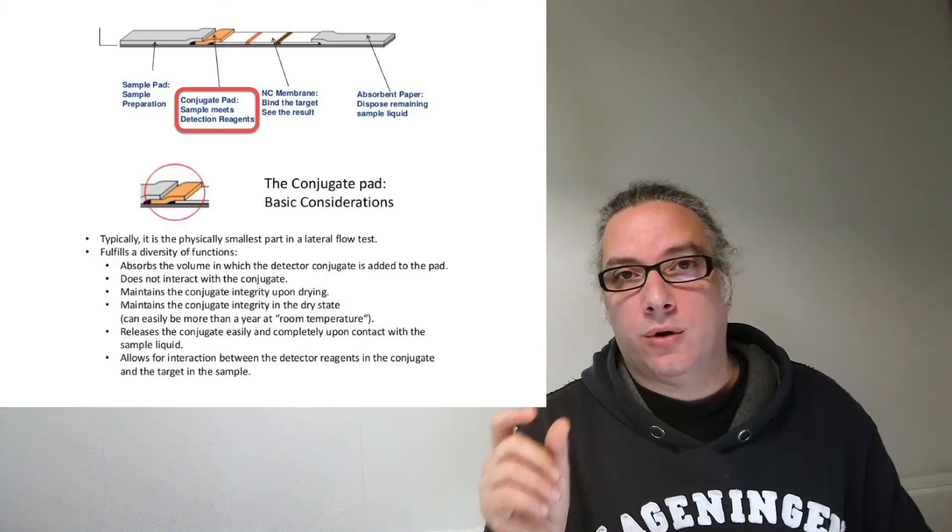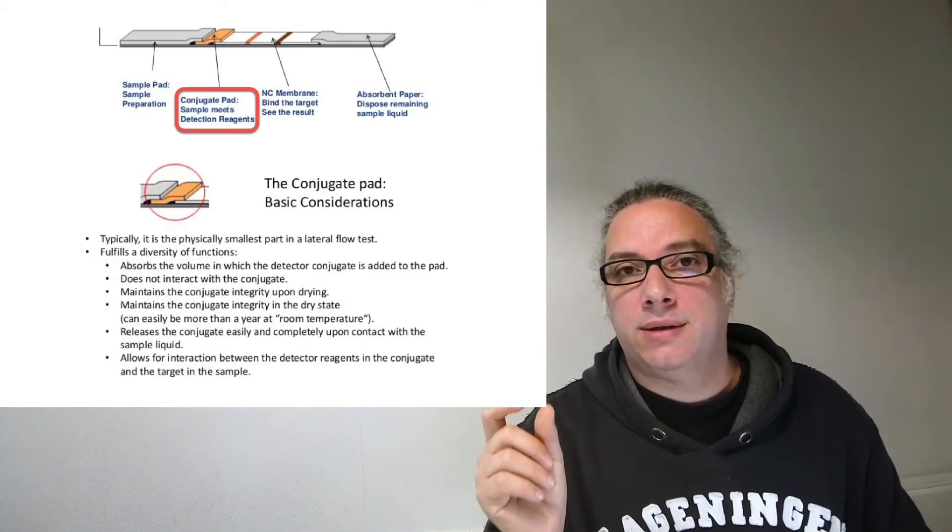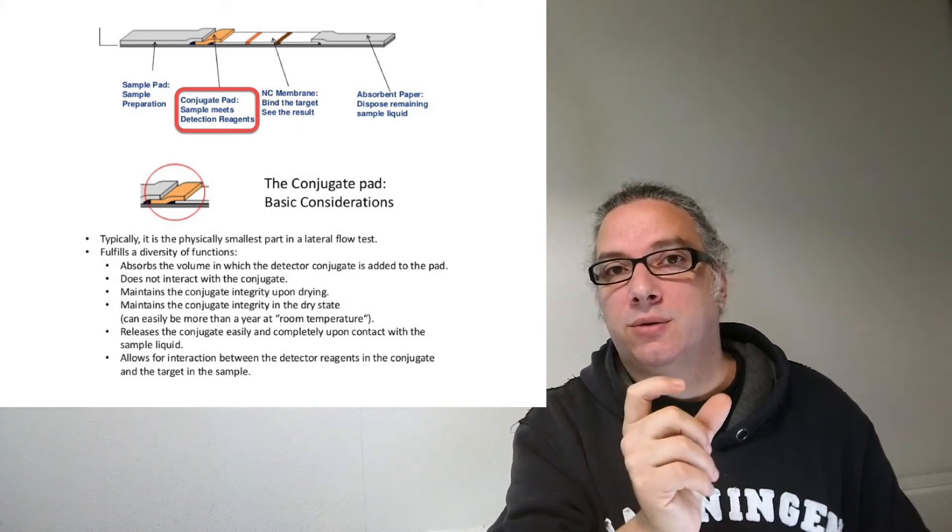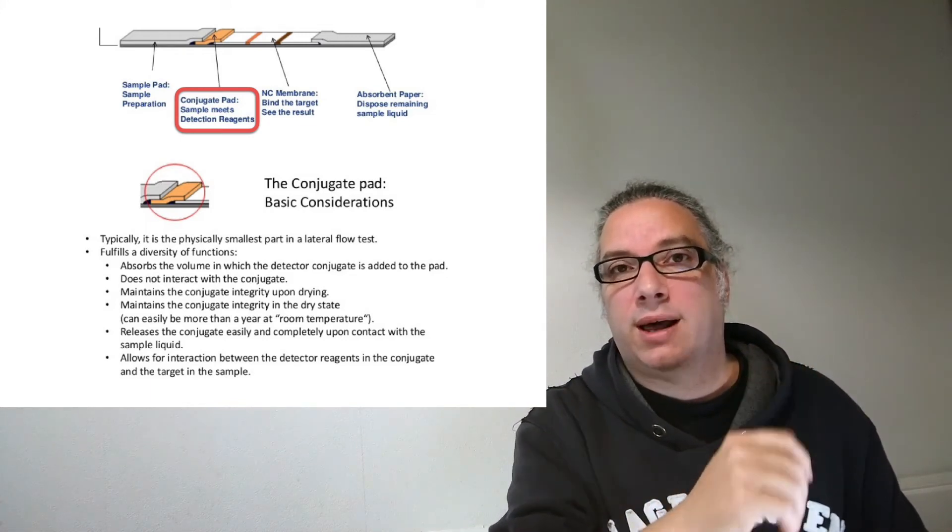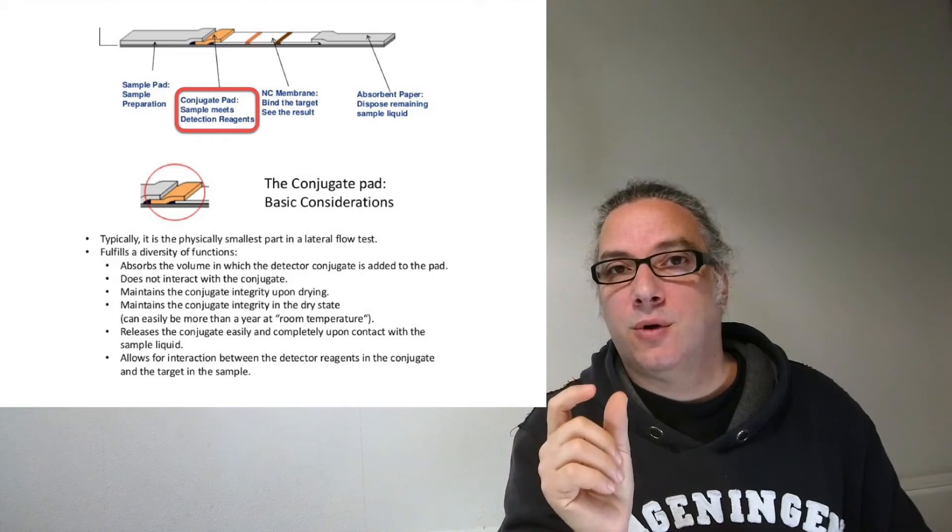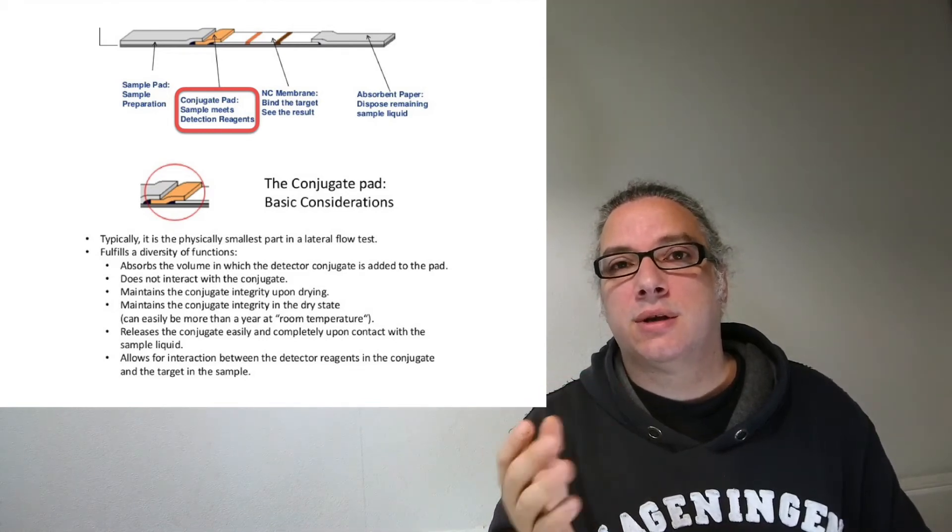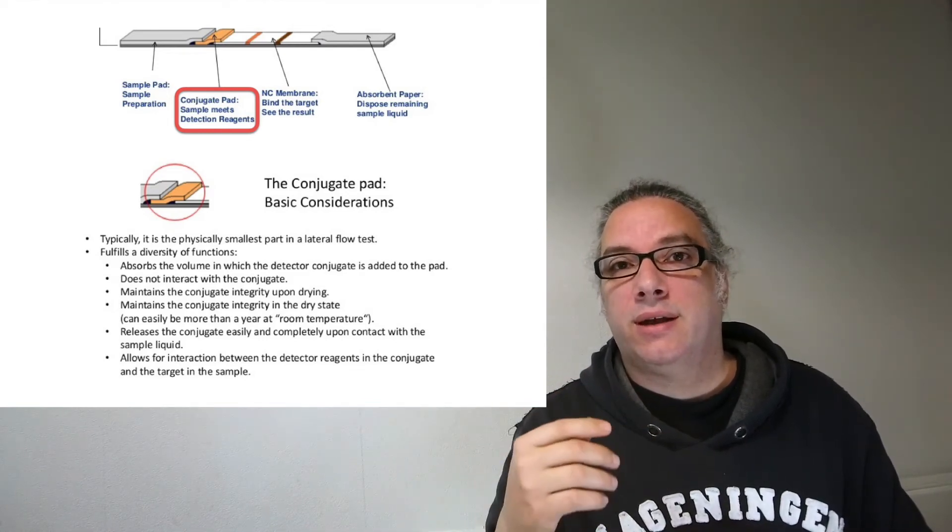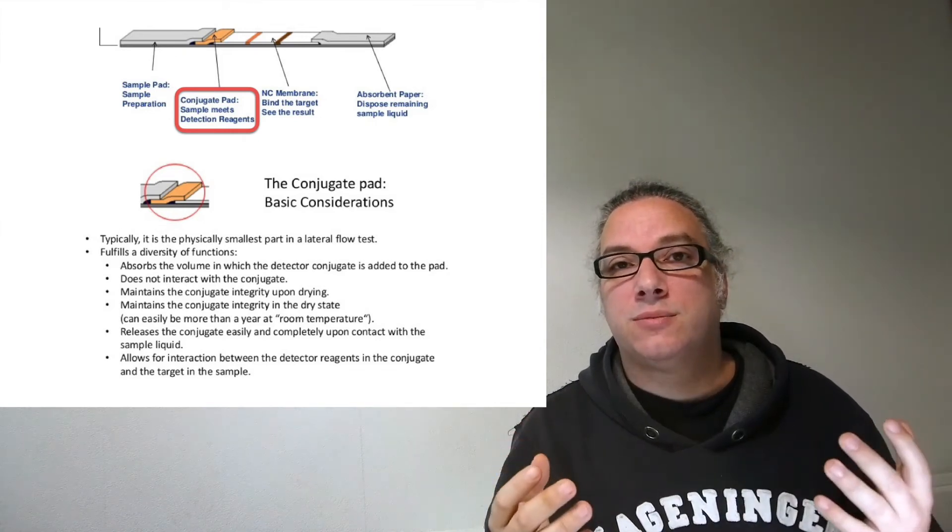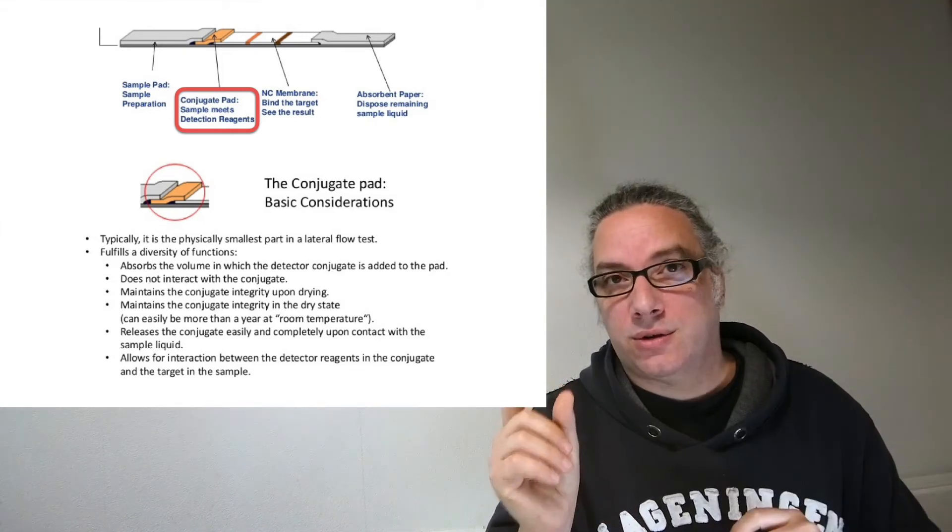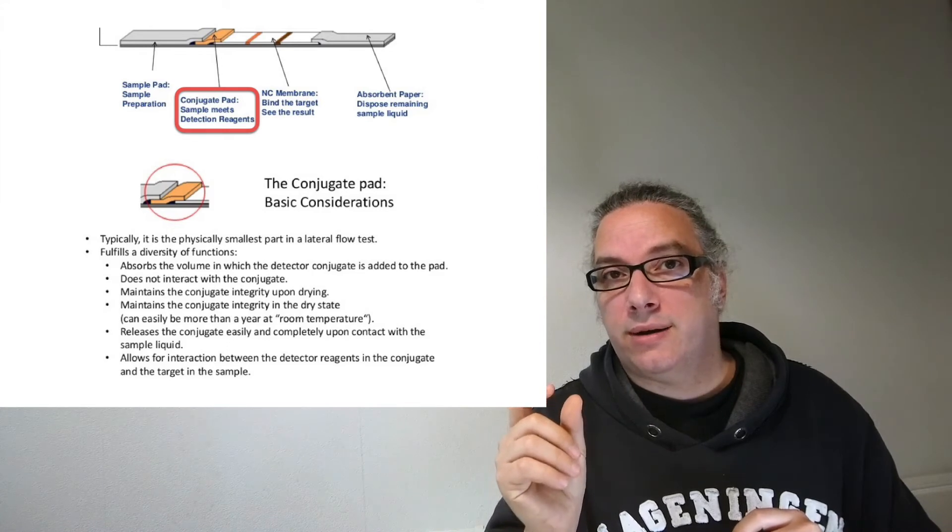Then we have the conjugate pad. The conjugate pad is where your reagents are. In the first part you put your liquid with your analyte; in this small part you have your reagents. They start mixing, and if you have a reaction—for example, a supramolecular interaction between your analyte and sensor—this is where it happens.